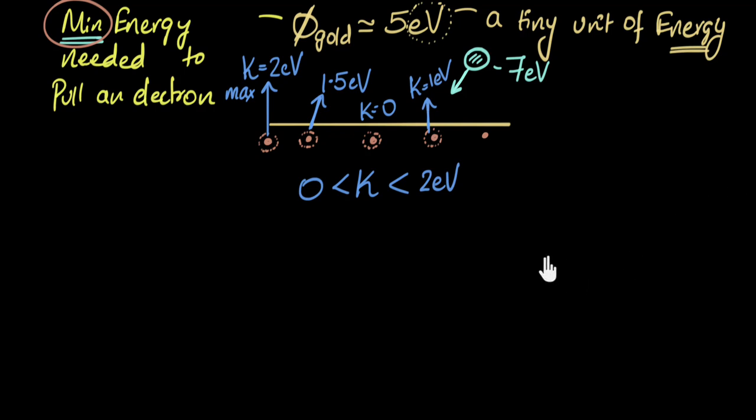Now, just to check our understanding, let's do one more quick problem. Let's say we take the metal cesium. It turns out that the work function of cesium is somewhere around two electron volts. And let's say we shine the same light, which has the same photon strength, seven electron volts. Can you pause and think about what would be the kinetic energy range over here in this case?